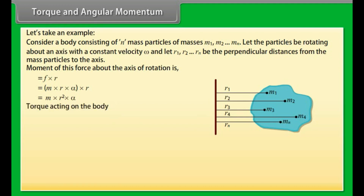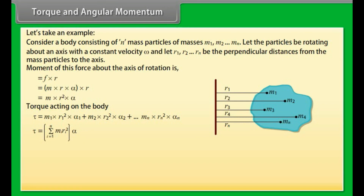Torque acting on the body is given by: τ = m₁r₁²α + m₂r₂²α + ... + mₙrₙ²α, which simplifies to τ = Σ(mᵢrᵢ²)·α, giving τ = I·α. If α = 1 rad/s², then I = τ.